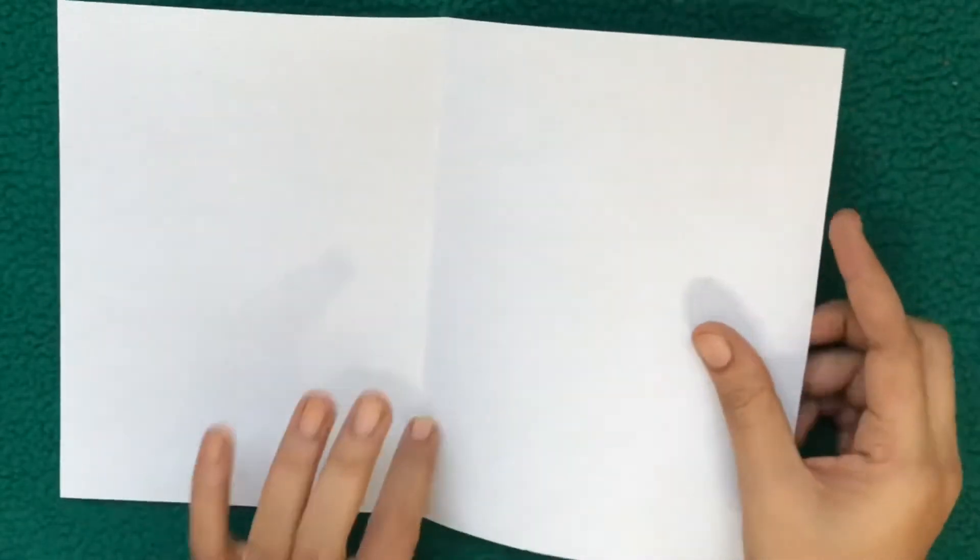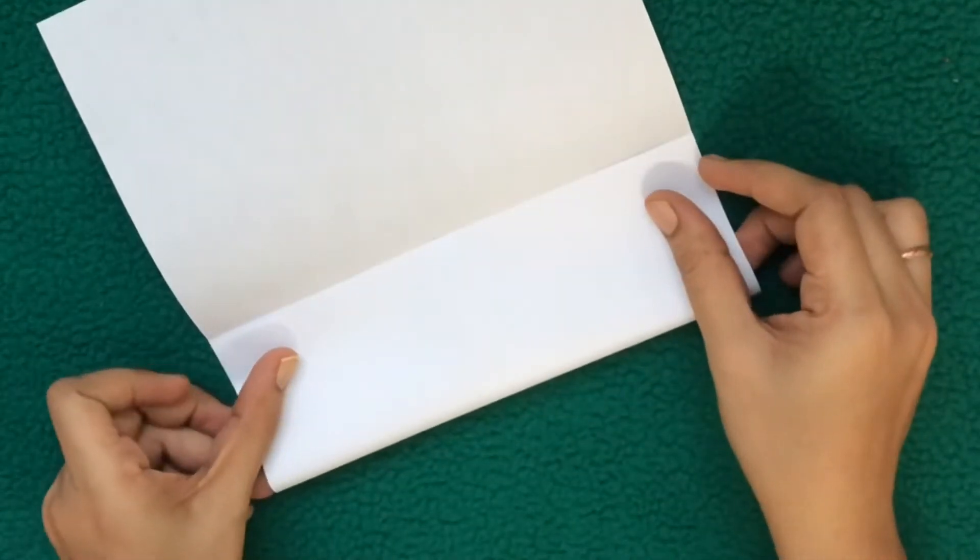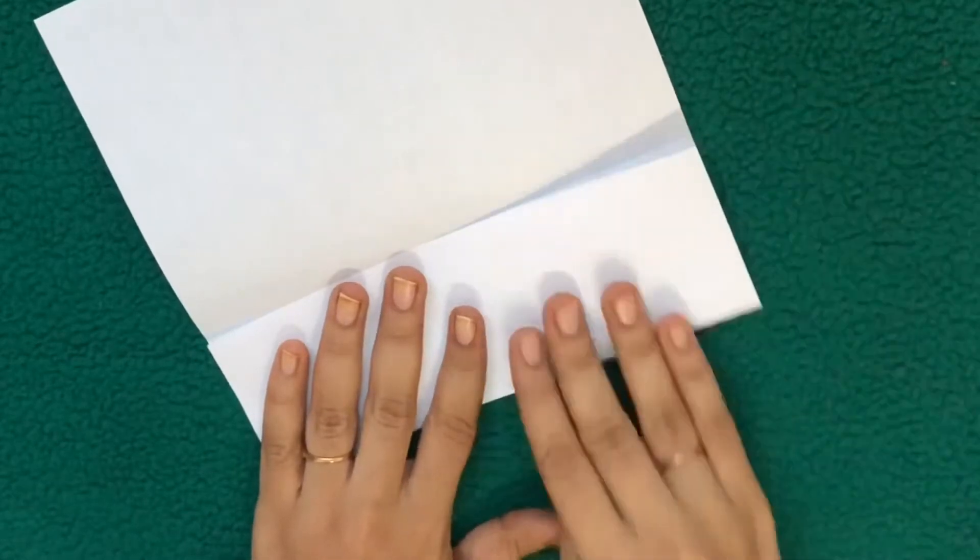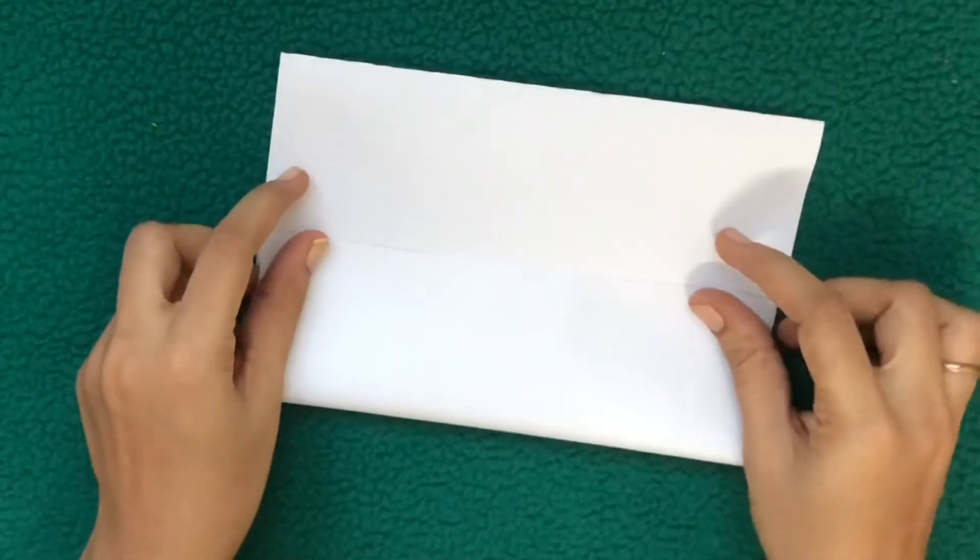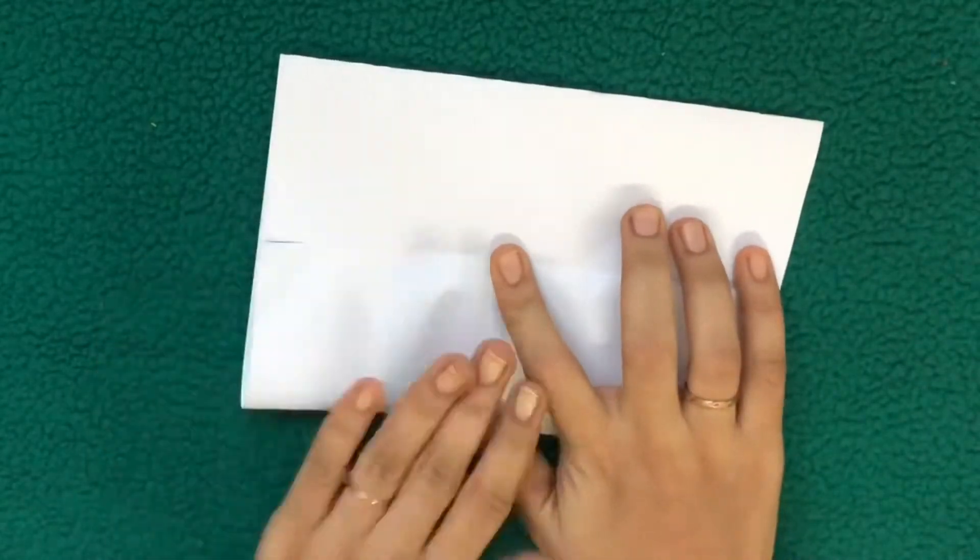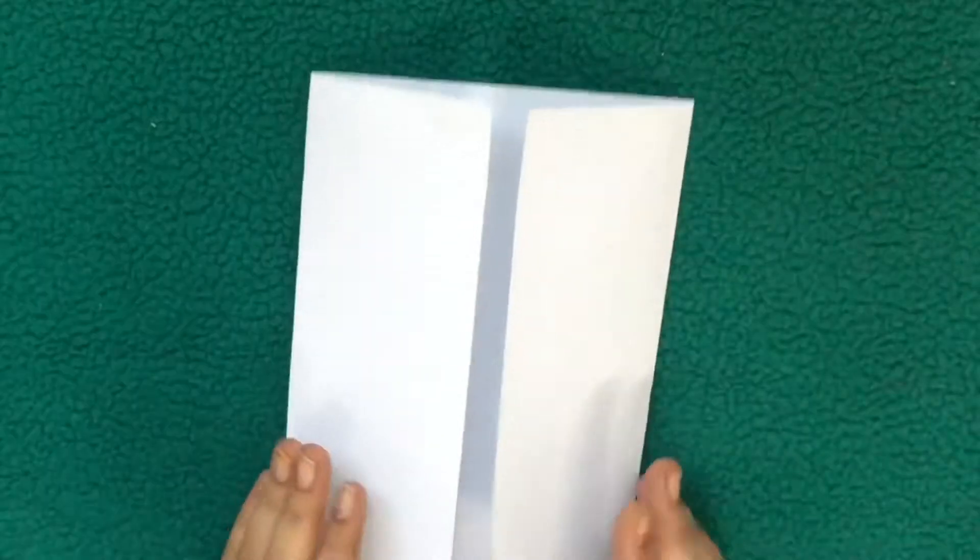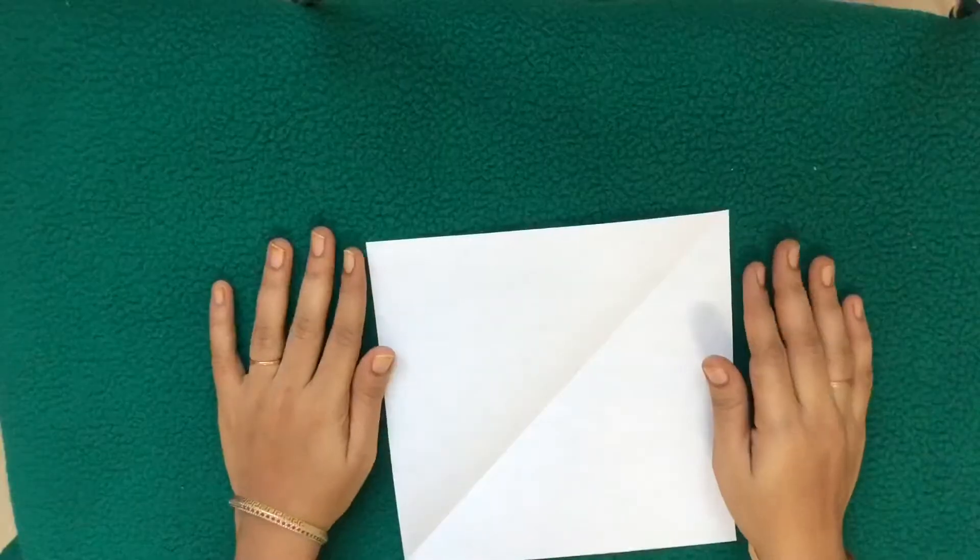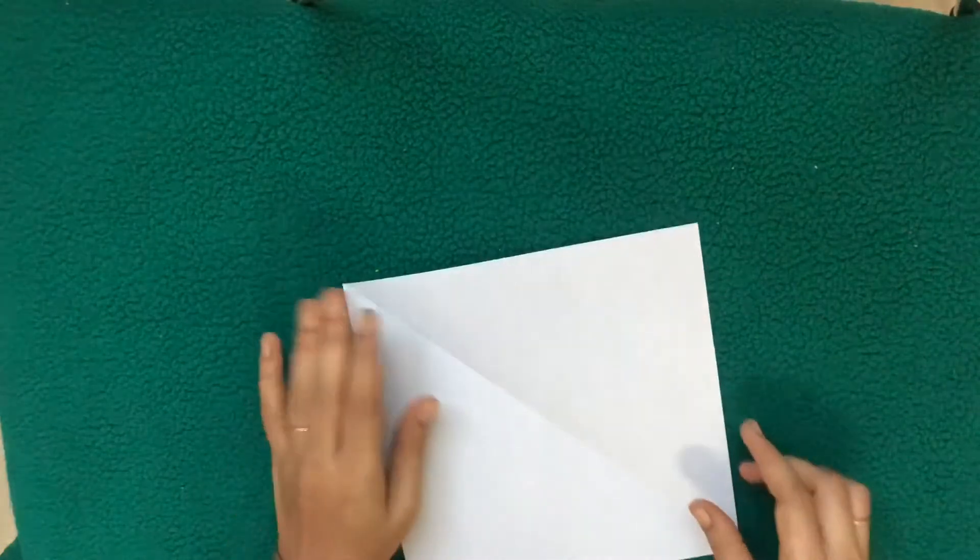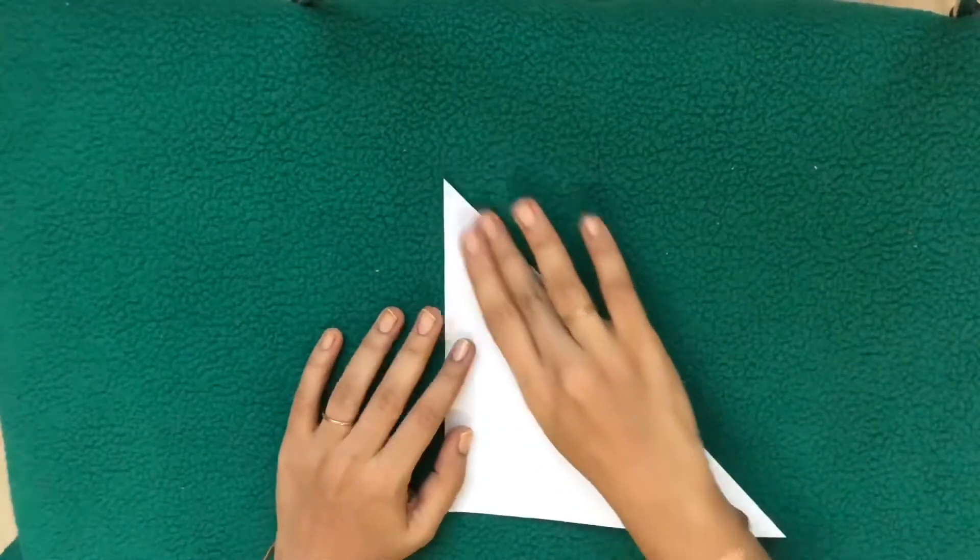Fold the right side to meet the center and crease it. Next, fold the left side into center. Yes, that is cupboard fold. Next one, triangle fold. Take a square paper and fold diagonally.